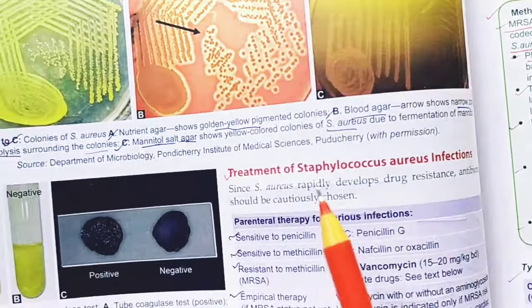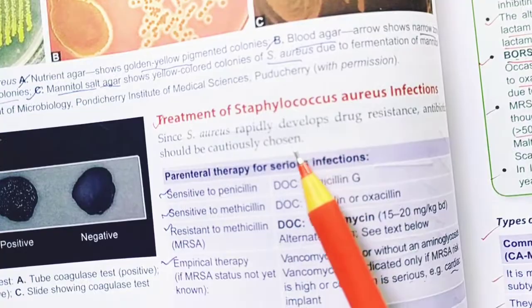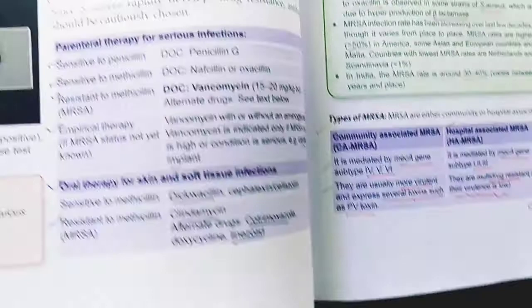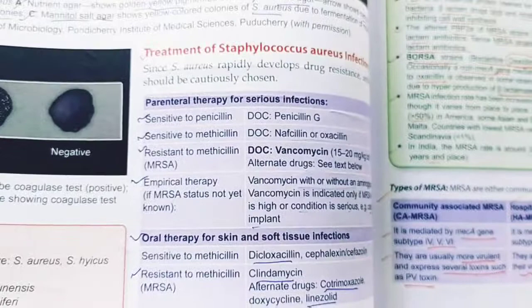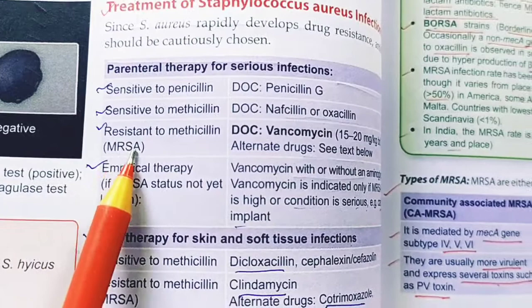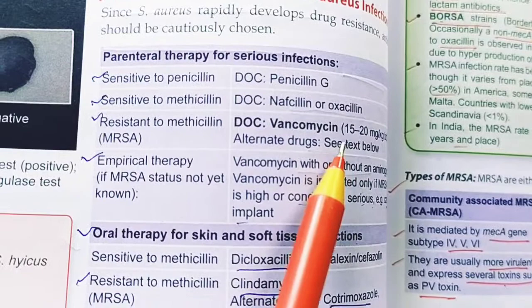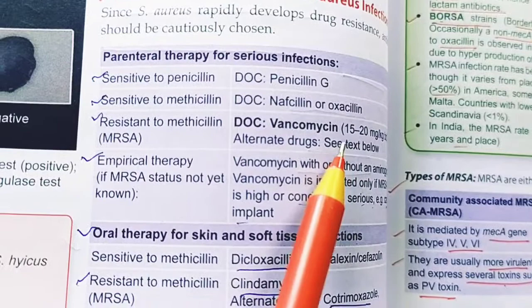For treatment: MRSA stands for methicillin-resistant S. aureus. The drug of choice for MRSA is vancomycin. For oral therapy of skin and soft tissue infections caused by MRSA, clindamycin can be used.